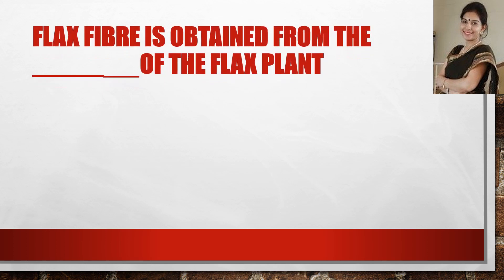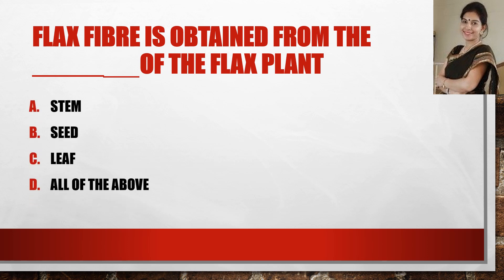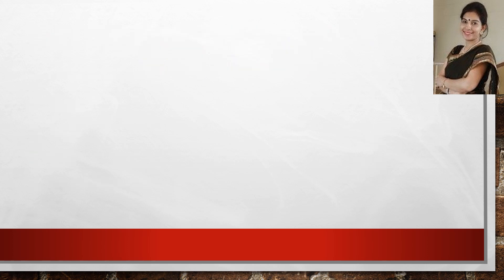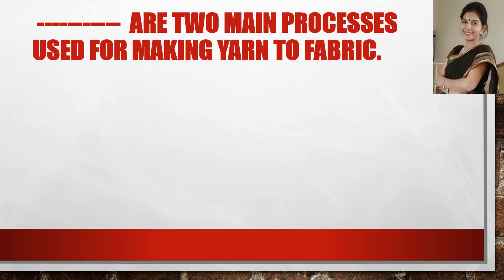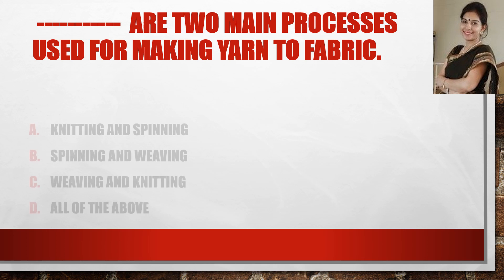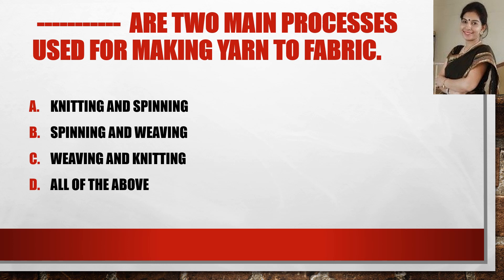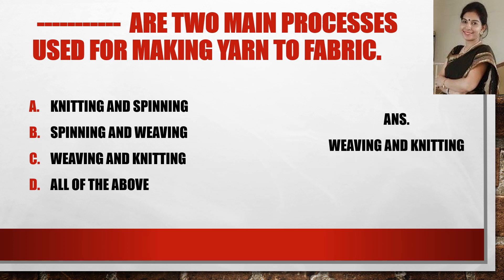Next question: flax fiber is obtained from the dash of the flax plant. Now the next question: dash are two main processes used for making yarn to fabric. The answer is weaving and knitting.